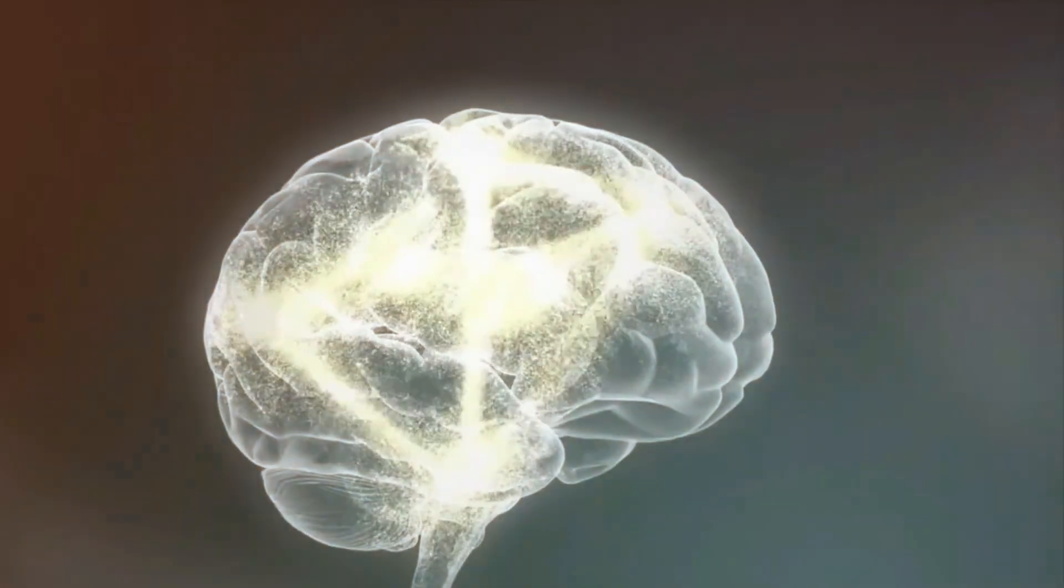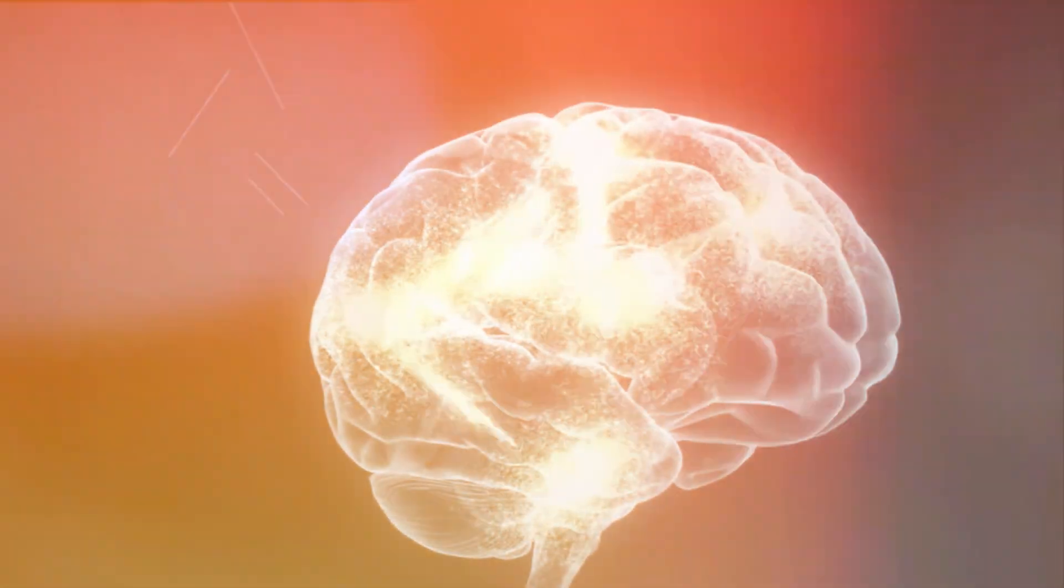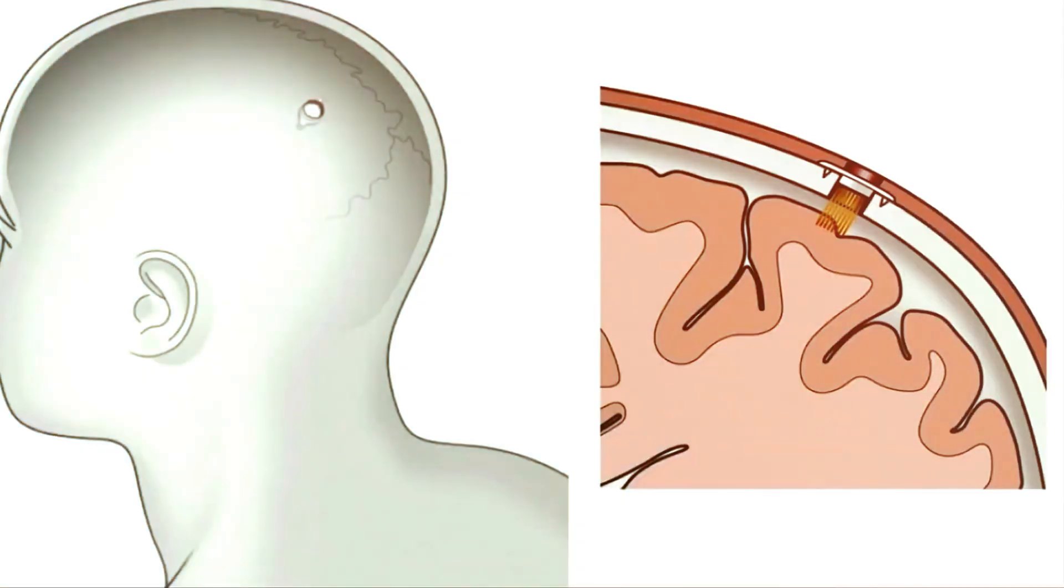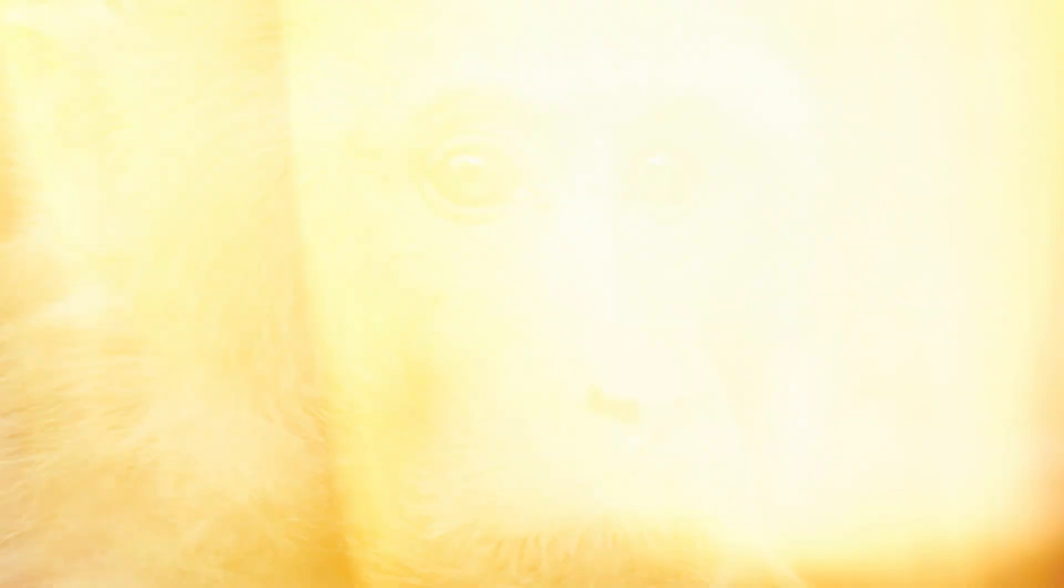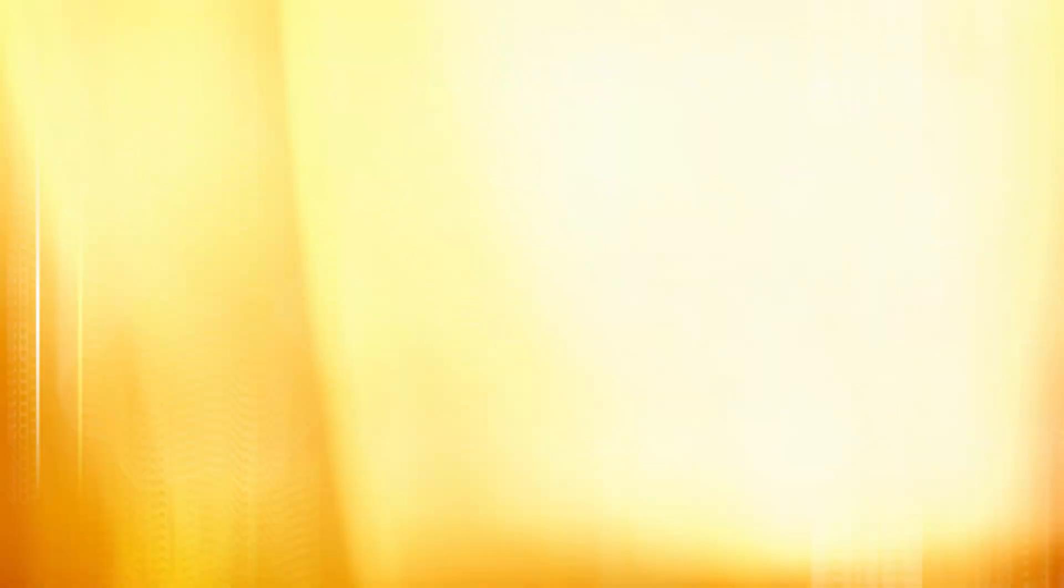However, Neuralink has faced several challenges and setbacks in its quest to create telepathy. The company has encountered technical difficulties and delays in designing, manufacturing, and implanting the telepathy chip, such as miniaturizing the chip, reducing wire thickness, and improving surgical procedures. Furthermore, Neuralink has faced ethical and legal issues and controversies while conducting animal and human experiments, such as obtaining consent, ensuring animal welfare, and complying with regulations.